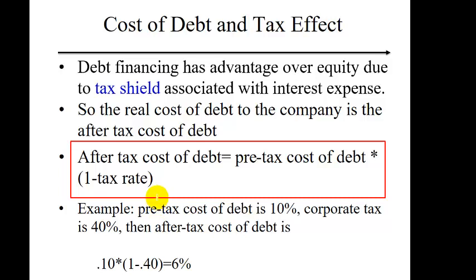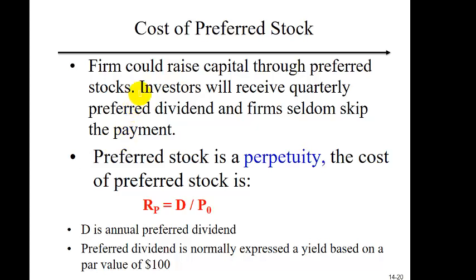Debt has an advantage since interest expenses are deducted from taxable income, which brings down the cost of debt. We call the cost of debt calculated previously the pre-tax cost of debt, and we adjust for the after-tax effect to get the after-tax cost of debt. In addition to raising capital through debt and equity, firms sometimes raise capital by selling preferred stock. Preferred stocks typically receive dividend payments every quarter, and firms seldom skip the payment, so the cash flow is like a perpetuity. We need the preferred stock dividend dollar amount and preferred stock price to find the cost of preferred stock. Preferred stocks are often expressed as a percentage yield — in that case, multiply by the par value of $100 to convert to a dollar amount.